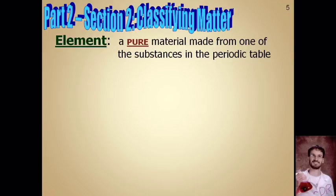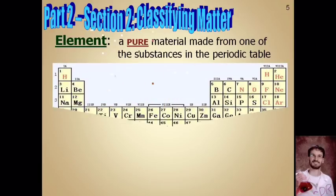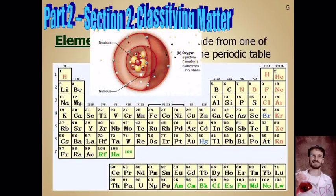At its most basic form, we consider an element to be a pure piece of matter. An element is a pure material made from just one of the substances on the periodic table. And if you didn't know, this is a periodic table.